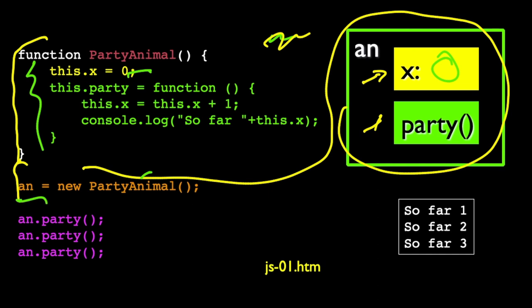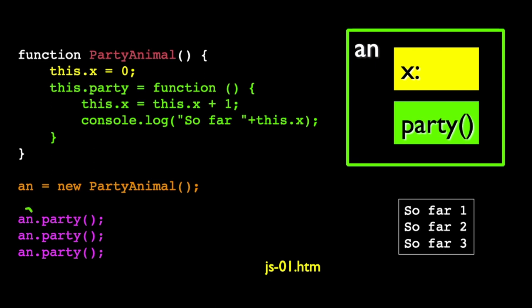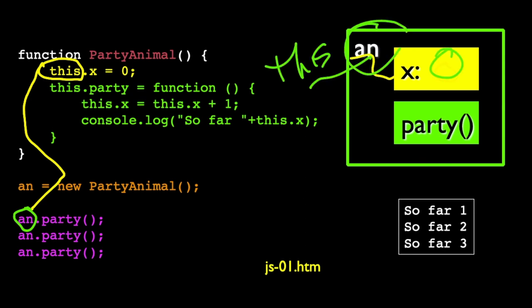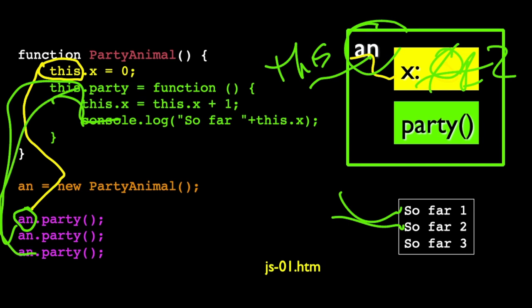When we're at this next line of code, before we call an.party for the first time, an.x has got a zero in it. Then we call an.party and it runs the code. An.party, this an is an alias for this. When it says this.x, it really is an.x. It runs the code. And then it adds this to be one. And then it prints out the first line. And then it does it again. And then it becomes two. And it prints out the second line. And it does it again. Prints out three. Makes it three. And prints out the third line. So that's how this code works.